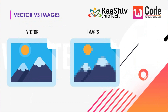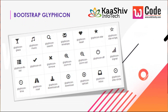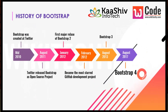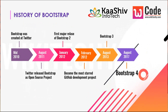Bootstrap uses vector images instead of normal images. With vector images, whether you zoom the website or view it on smaller devices, the images remain the same and the pixels won't degrade. Bootstrap also provides lots of glyph icons — for example, if you want an email icon you can use the class given by Bootstrap itself, so no need to add a separate image.